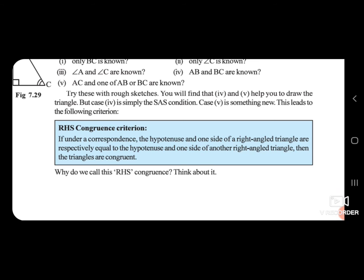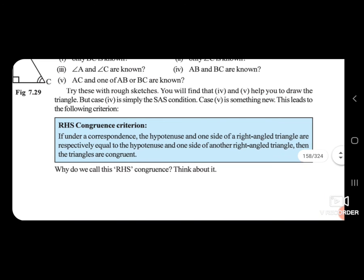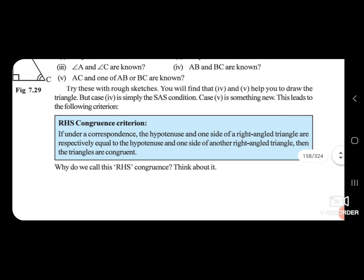If the hypotenuse and one side of a right angle triangle are respectively equal to the hypotenuse and one side of another right angle triangle, then the triangles are congruent.